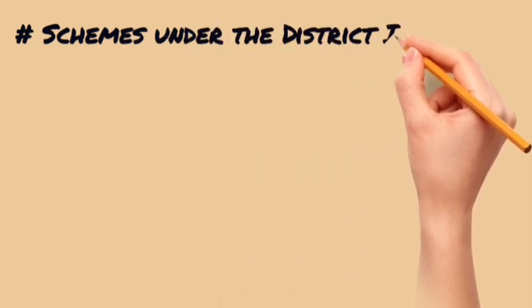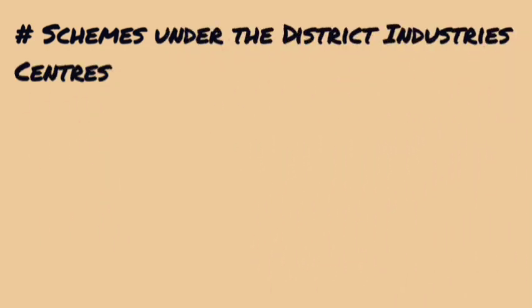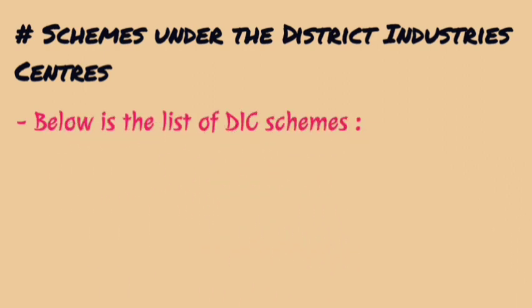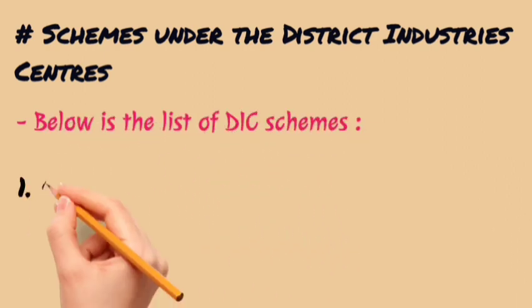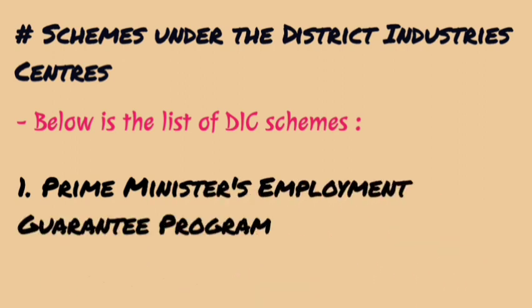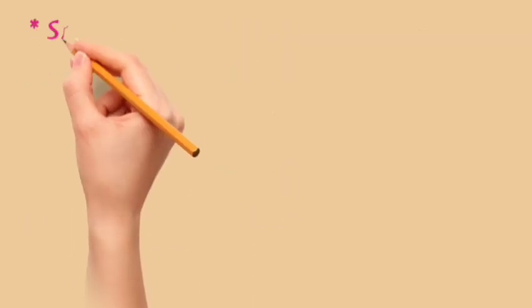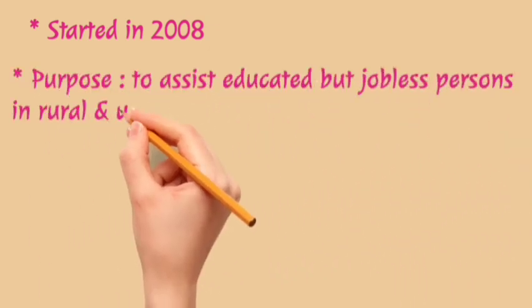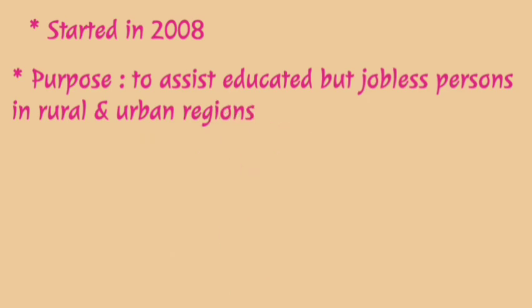Now we will see some schemes that are under the District Industrial Centers. The first scheme is called the Prime Minister Employment Guarantee Program, started in 2008. Its main purpose is to guide, assist, and help educated but jobless persons in rural areas.